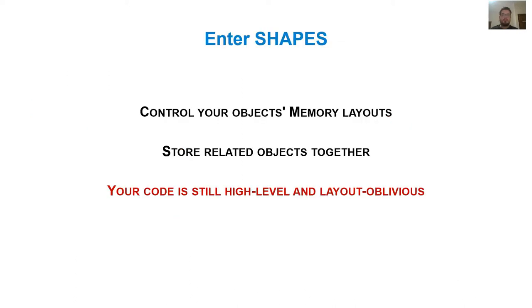Well, this is where Shapes comes into the picture. Shapes promises the following. Firstly, we can control how our objects are laid out in memory in an easy manner. And secondly, we can store related objects together in memory. All that while keeping our business logic high-level and oblivious to whatever layout we might be using.